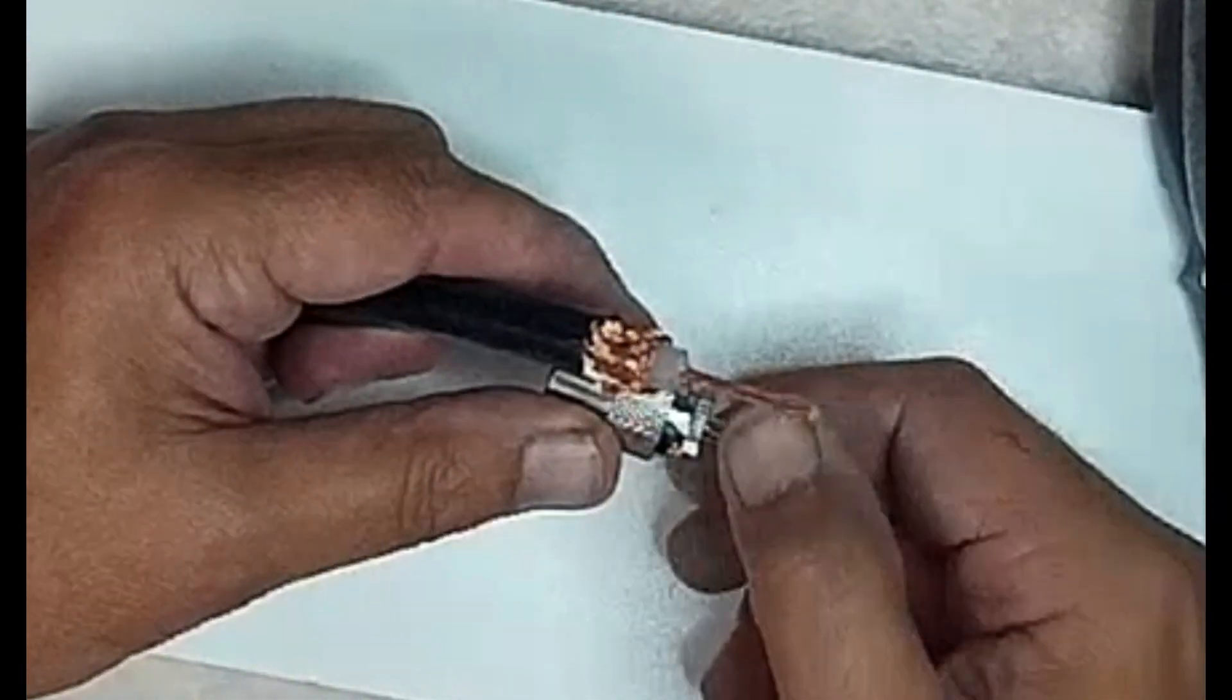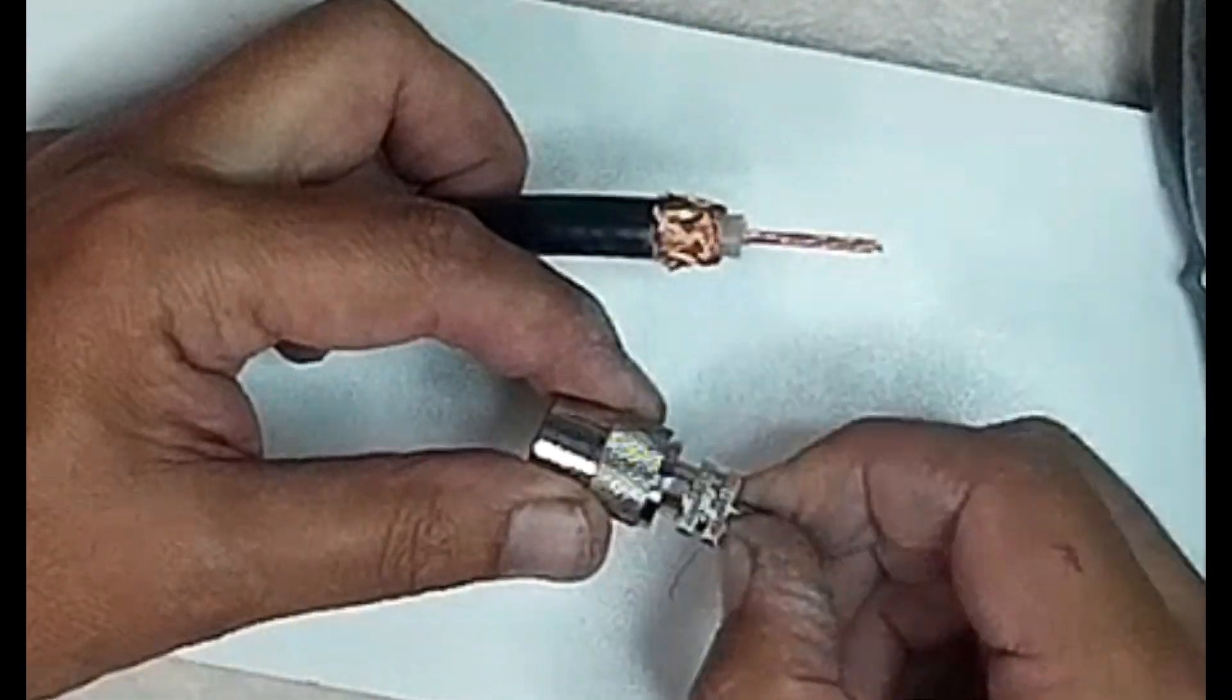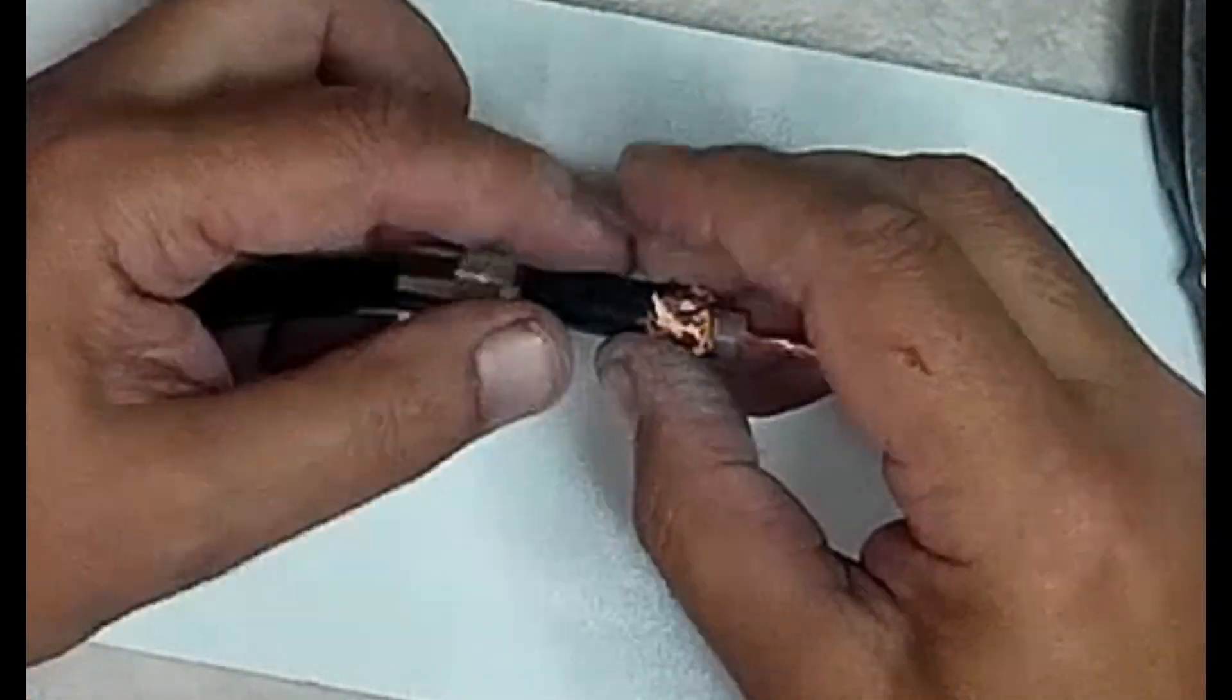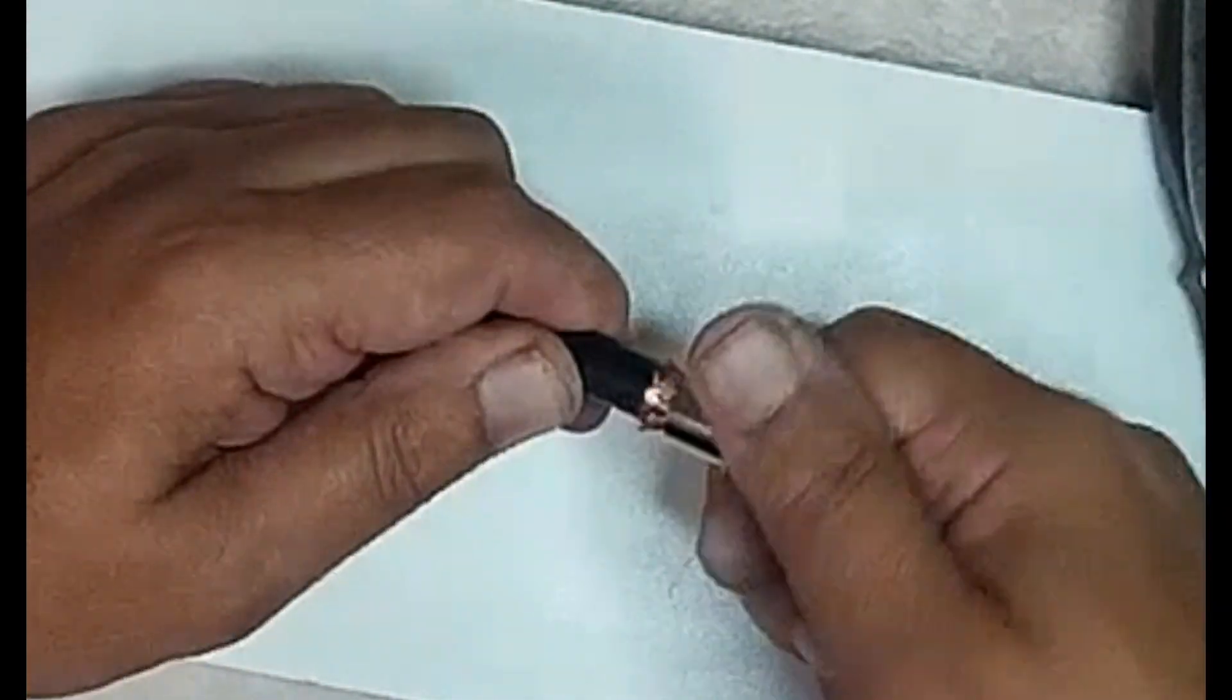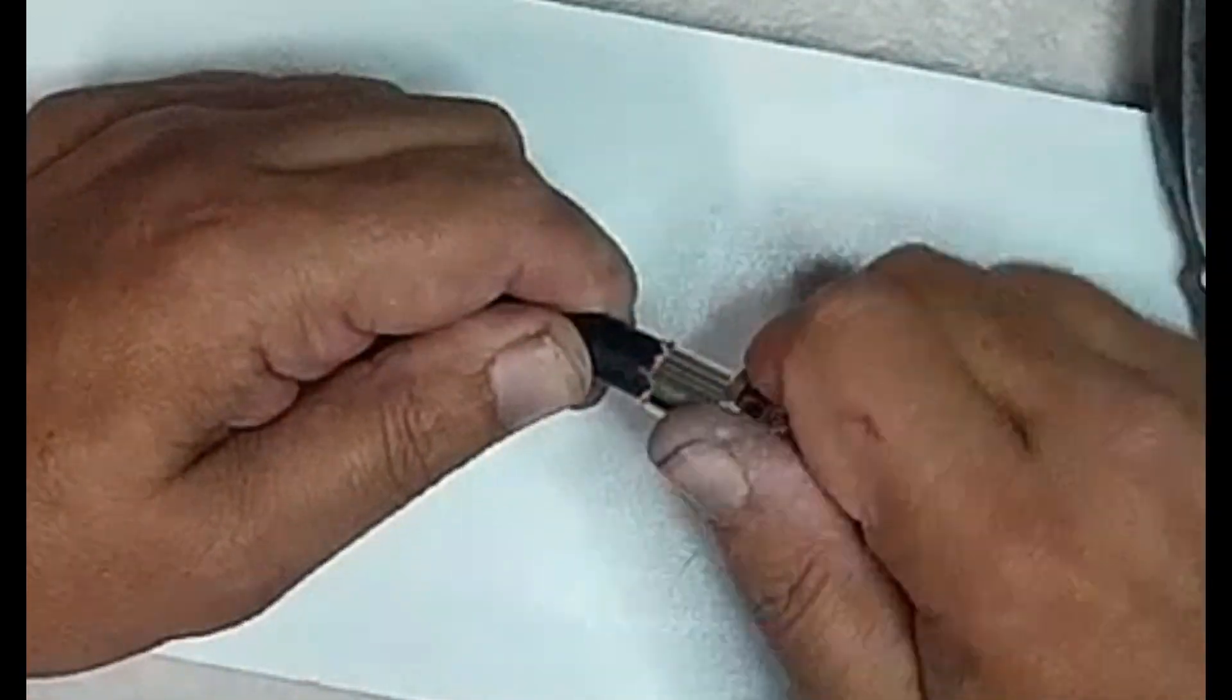Next, separate the two halves of the PL259 plug. Slide the outer part of the plug over the cable first. Then the rest of the connector can be screwed on firmly to the thick braided copper.